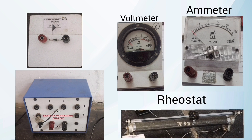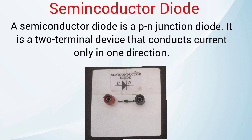What is meant by a semiconductor diode? A semiconductor diode is a P-N junction diode. It is a two-terminal device that conducts current in only one direction.